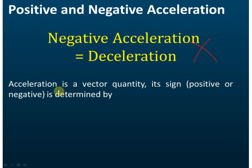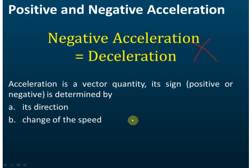Acceleration is a vector quantity and its sign — positive or negative — is determined by two things: its direction, and the change of the speed. When the acceleration is negative, it can mean the object moves in the opposite direction; the speed is not necessarily decreasing. I'll show you examples in the very next slide.